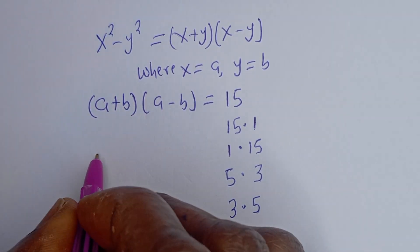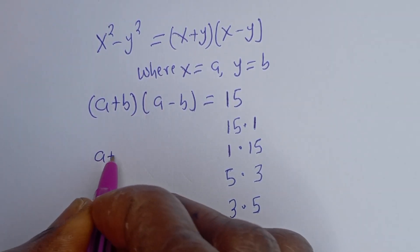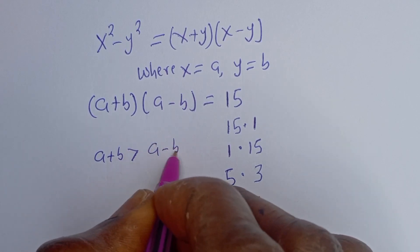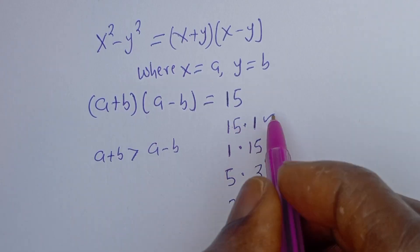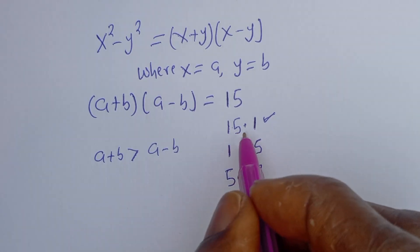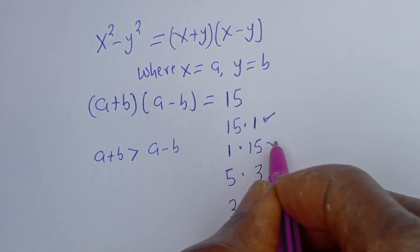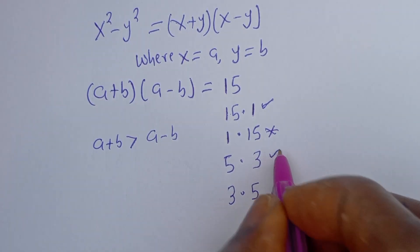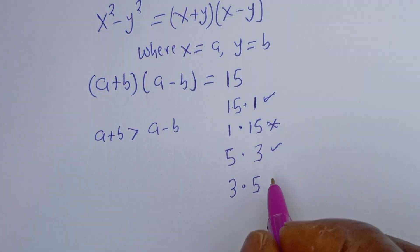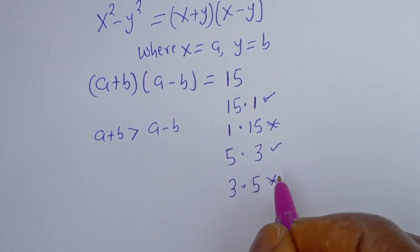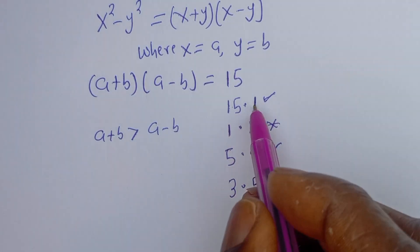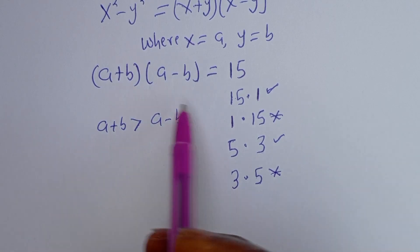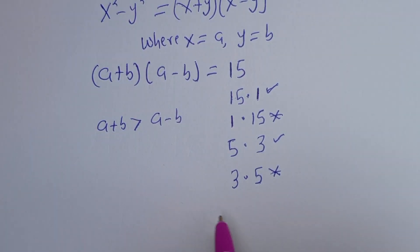If you look at this, a + b is greater than a - b. Therefore, 15 is greater than 1 — this is true. Then 1 is less than 15 — this is also true. Then 5 is greater than 3 — this is true. But 3 less than 5 used as (a+b) is wrong. So we will consider 15 × 1 and 5 × 3, giving us two different cases.